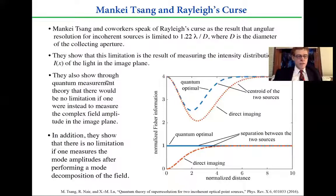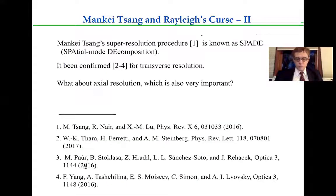It's because people tend to measure the intensity distribution of the light in the image plane. If instead one were to measure the complex field amplitude, there is, in concept, no limitation to the spatial resolution that one can achieve. But how to do this? Well, they show that if we do a mode decomposition of the field and measure the amplitudes of each of these modes, then we can also overcome the Rayleigh criterion.